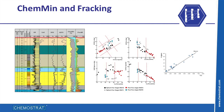In addition to correlation, elemental data is also routinely used in shale plays to model mineralogical abundances, predict lithologies, estimate TOC and to calculate a relative brittleness index. This provides a cost-effective alternative to XRD and TOC analysis and can be deployed at well-site for frack optimisation.